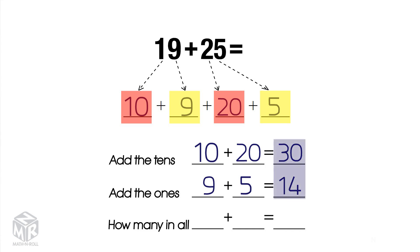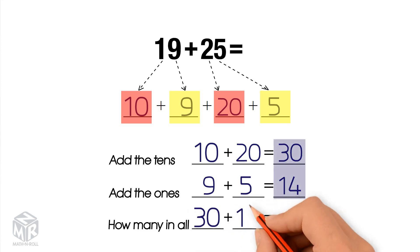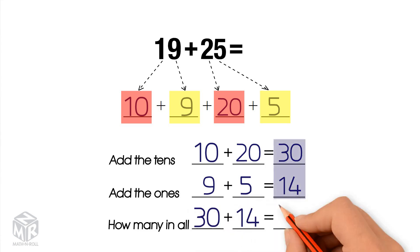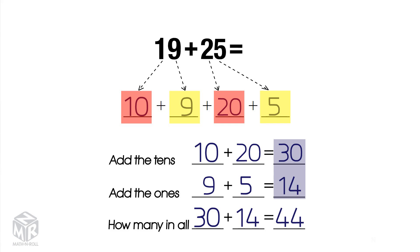Finally, we add them together: 30 plus 14 equals 44. So 19 plus 25 equals 44.